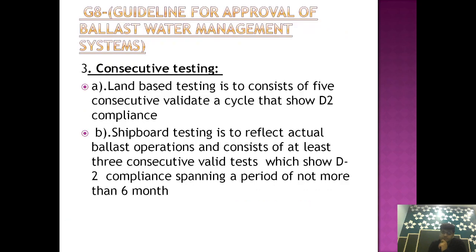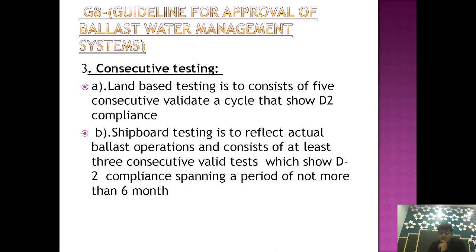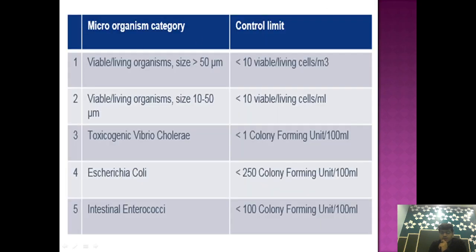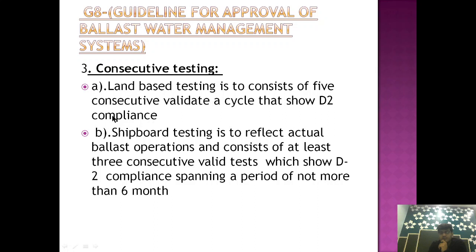The third part is consecutive testing, which consists of two parts: land-based and ship-based. In land-based testing, it consists of five consecutive validated cycles that show D2 compliance. This means we are consecutively treating the ballast water for five cycles using the ballast water treatment plant, to make sure that in continuous operation it is continually complying with the D2 standard, which specifies acceptable quantities of various sizes of organisms and different types of bacteria.